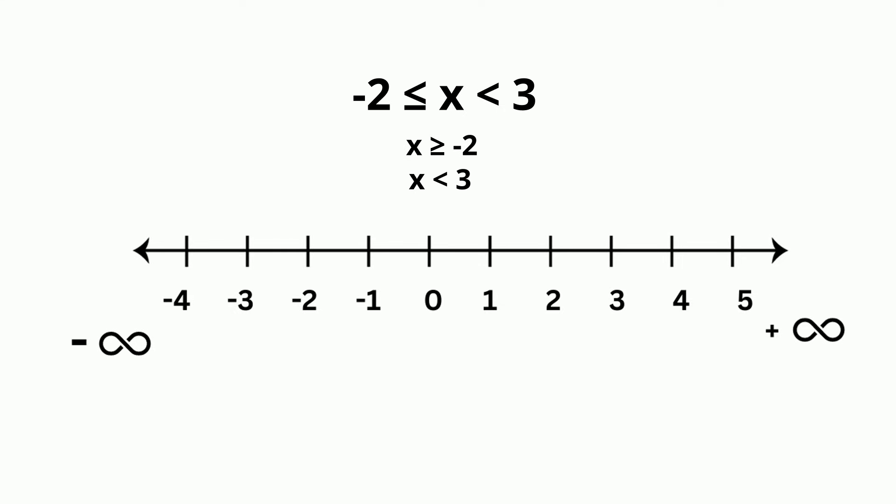Okay, so here it is on the number line. Negative 2 is closed because it includes the negative 2, and 3 is open. So, I'm going to write it left to right, okay, bracket, negative 2, comma, 3, and then use parentheses because it's open. I hope that was helpful. Thanks for watching.